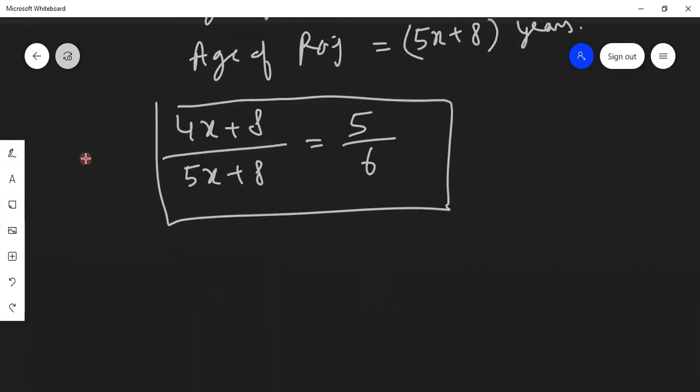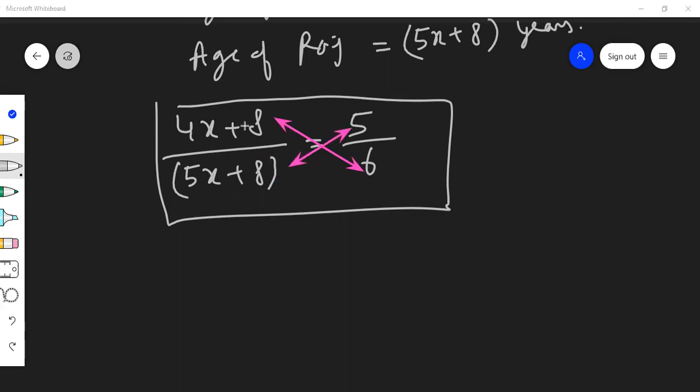To solve this, what we can do? We can multiply both sides by denominators. Or we can also say we can cross multiply. You must have heard about the cross multiplication in the fractions. This term gets multiplied with this and this one with this. So we write it like this: 6 into 4x plus 8, 6 times 4x plus 8 will be same as 5 times 5x plus 8.